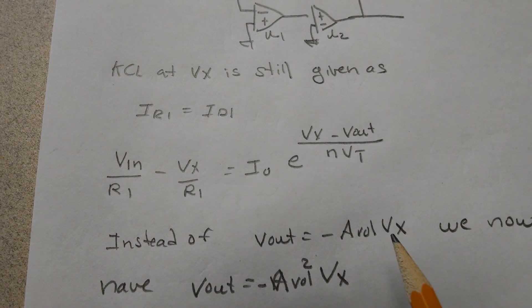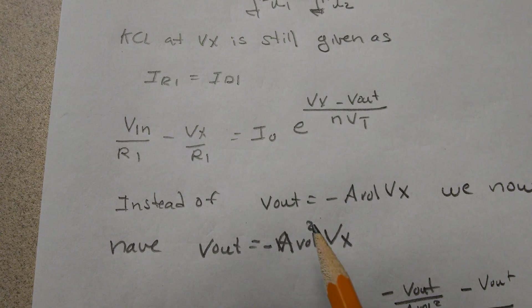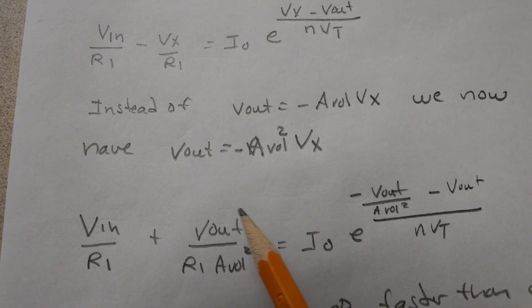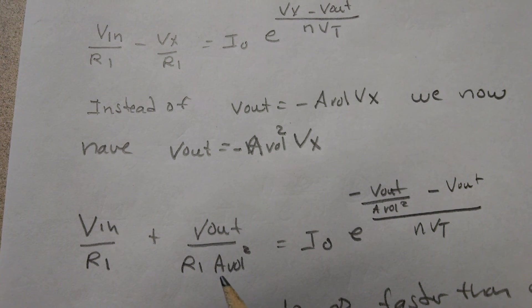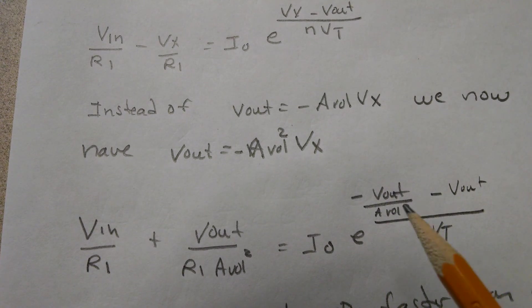But instead of Vout equals negative Avol times Vx, we now have Vout equals negative open-loop gain squared times Vx. Substitute it, and what happens is this goes to zero sooner than if this isn't squared. Same here, goes to zero sooner than if that's not squared, and it gets us right back to where we had our logarithmic amplifier.